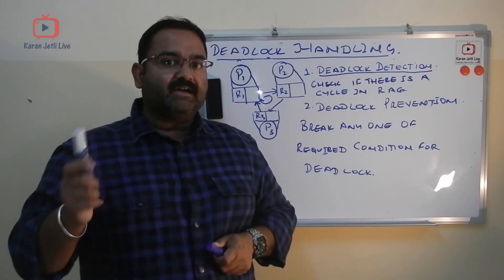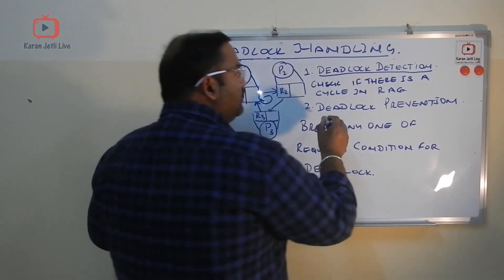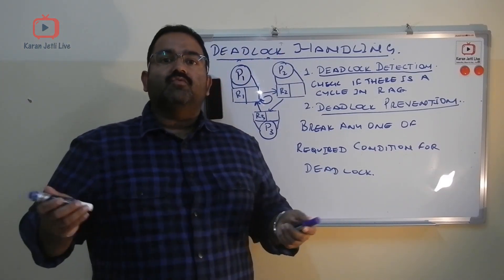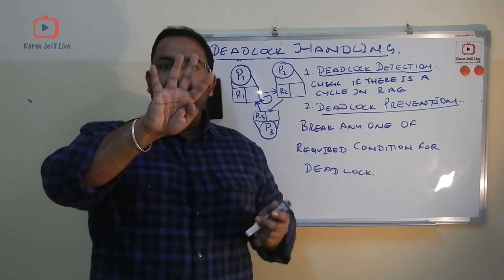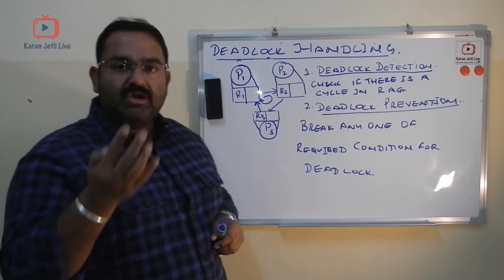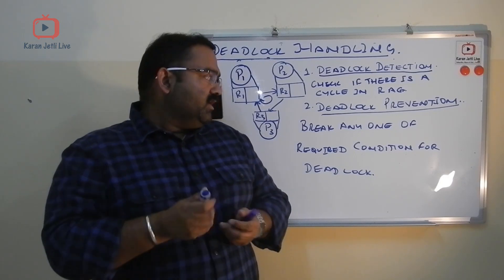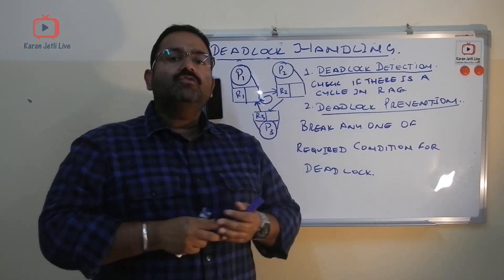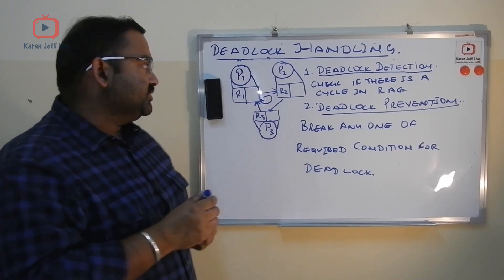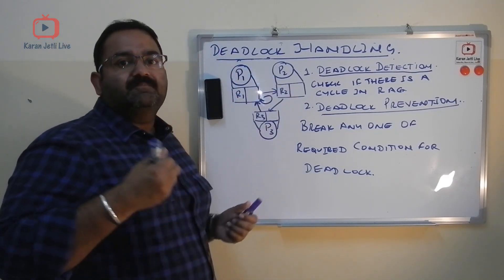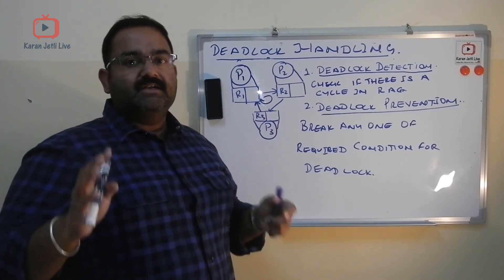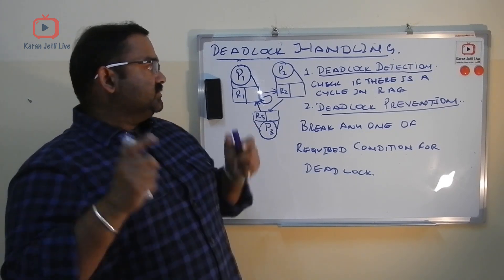If there is a cycle it means a deadlock is detected. The second step is called deadlock prevention. For a deadlock to happen there are four main conditions: mutual exclusion, no preemption, hold and wait, and circular wait. In deadlock prevention, if you break any one of those four conditions, the cycle automatically breaks and it breaks the deadlock.